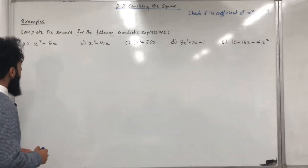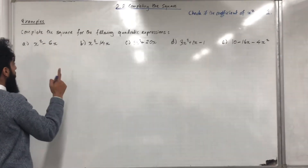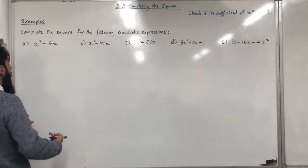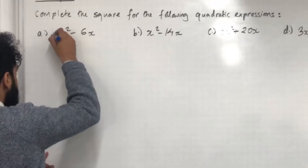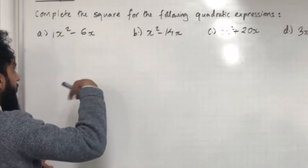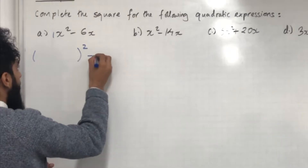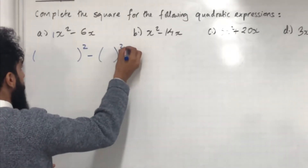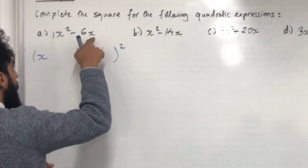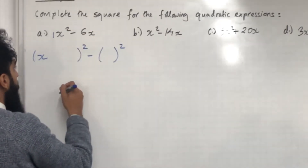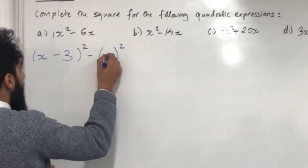Let's have a look at Part A. We want to complete the square on this quadratic expression. The first step is to check the coefficient of x squared, which is the number in front of x squared. In this case it is 1, so we proceed forward. The next step is to put bracket squared, minus bracket squared, then stick in x. The coefficient of x is minus 6, and we half it — half of minus 6 is minus 3 — so we put minus 3 in both places.